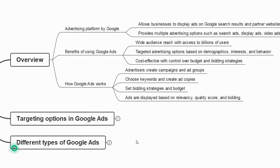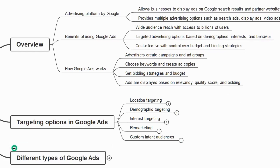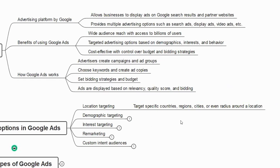The next thing we have is targeting options in Google Ads. There are different types of targeting: location targeting, demographic targeting, interest targeting, remarketing, and custom intent audience. Let me explain each one by one.